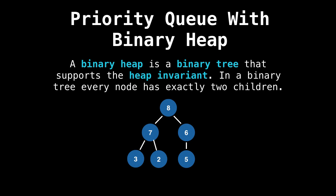A binary heap is a binary tree that supports the heap invariant. In a binary tree, every node has exactly two children. So the following structure is a binary heap, which satisfies the heap property that every parent's value is greater than or equal to the child and every node has exactly two children. Well, you may be thinking, the bottom nodes, also known as leaves, don't have children.